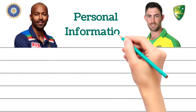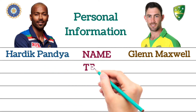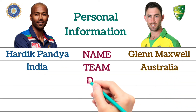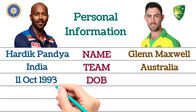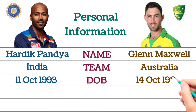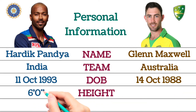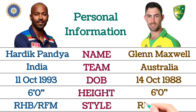Personal Information. Names: Hardik Pandya and Glenn Maxwell. Teams: Hardik Pandya plays for India, Glenn Maxwell plays for Australia. Date of birth: Hardik Pandya, 11 October 1993; Glenn Maxwell, 14 October 1988. Height: both Hardik Pandya and Glenn Maxwell are 6 feet tall. Batting and bowling style: Hardik Pandya is a right-handed batsman and right-arm fast-medium bowler. Glenn Maxwell is a right-handed batsman and right-arm off-break bowler.